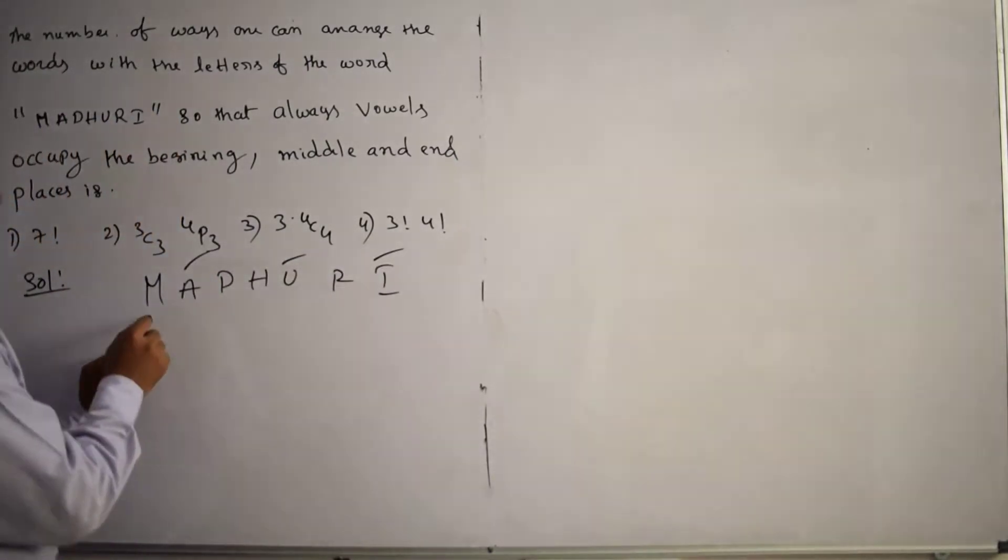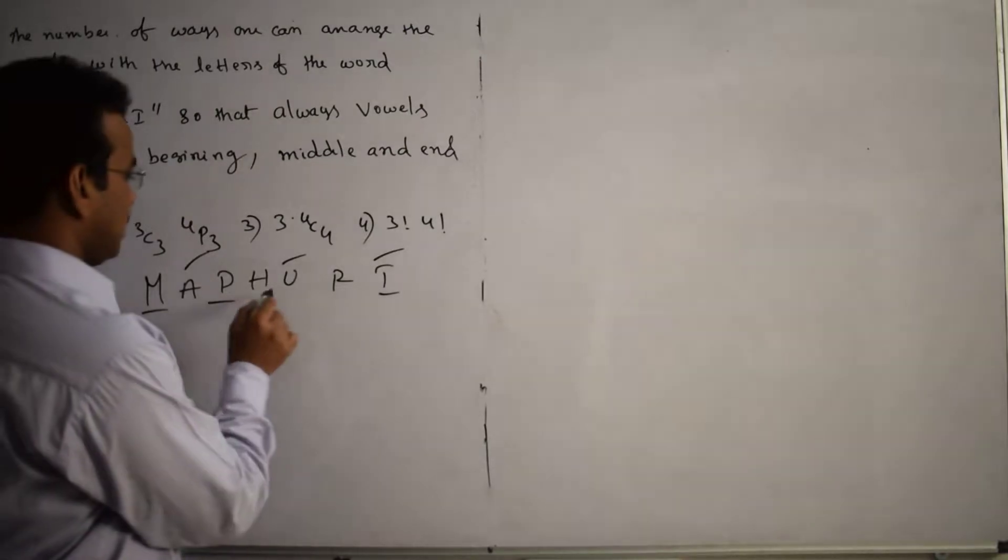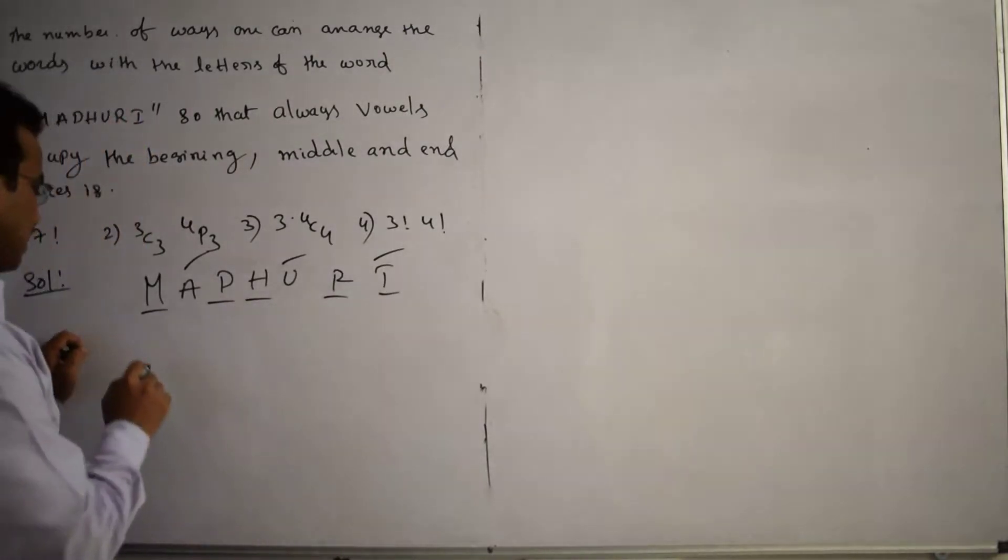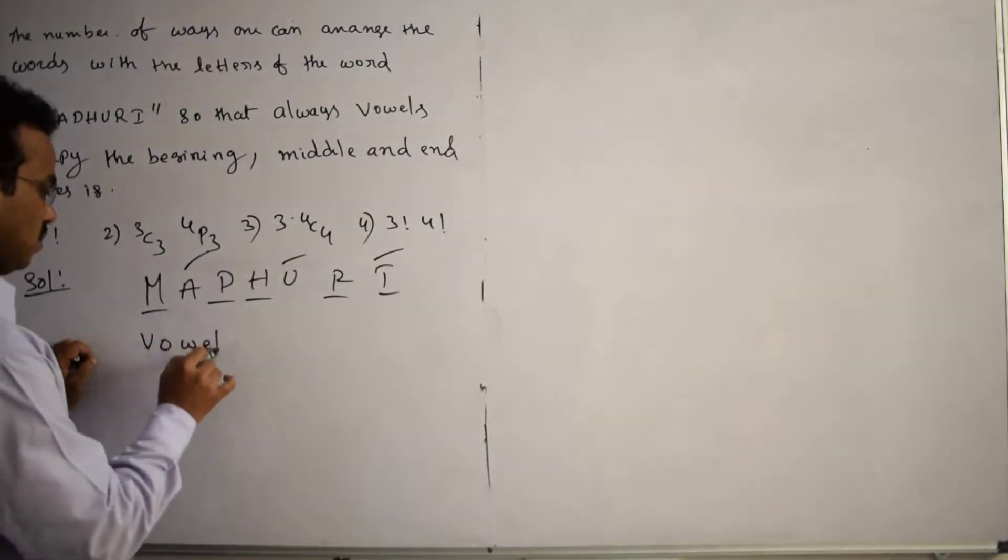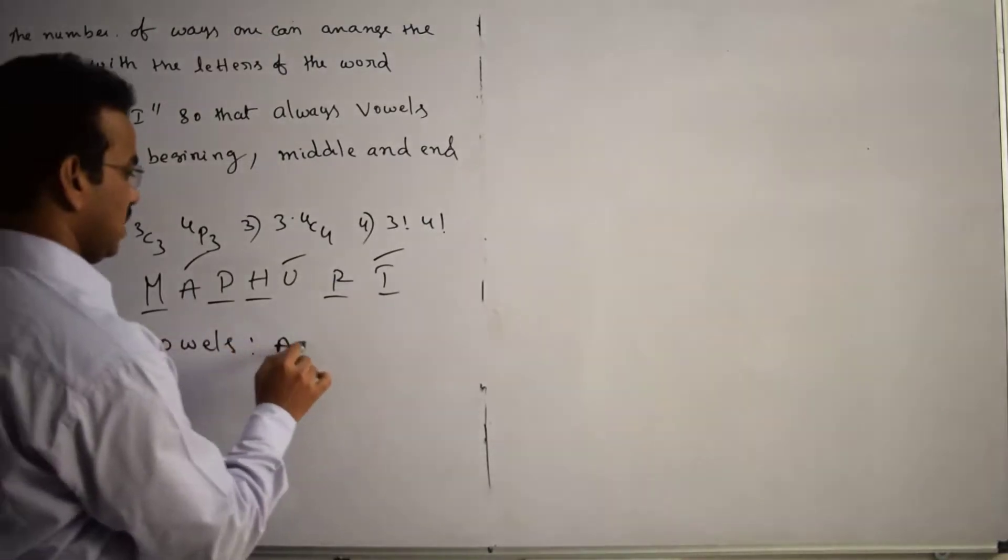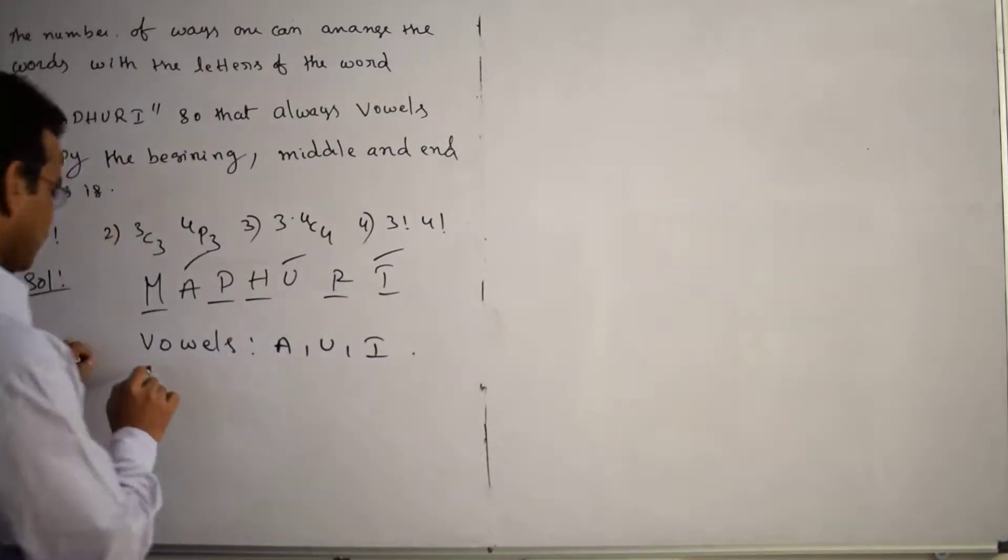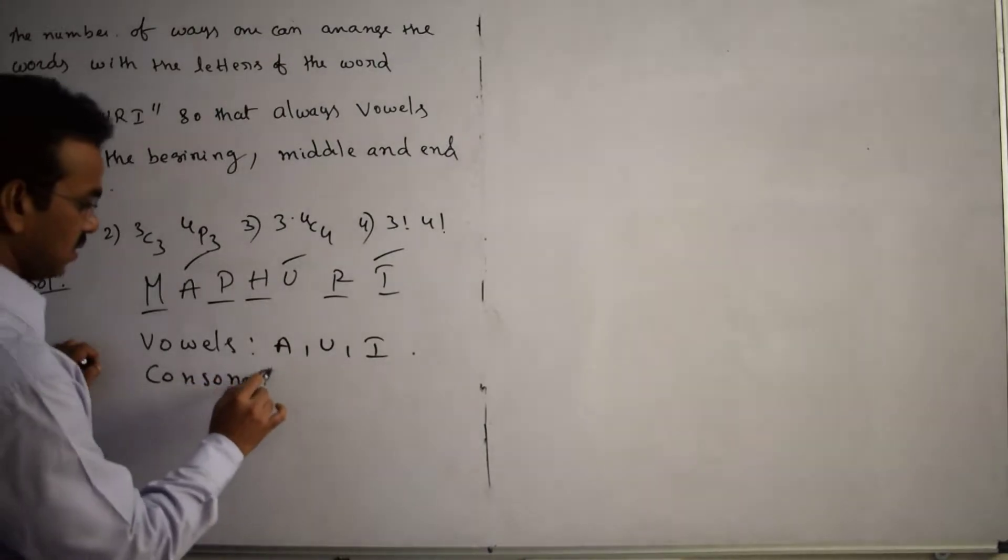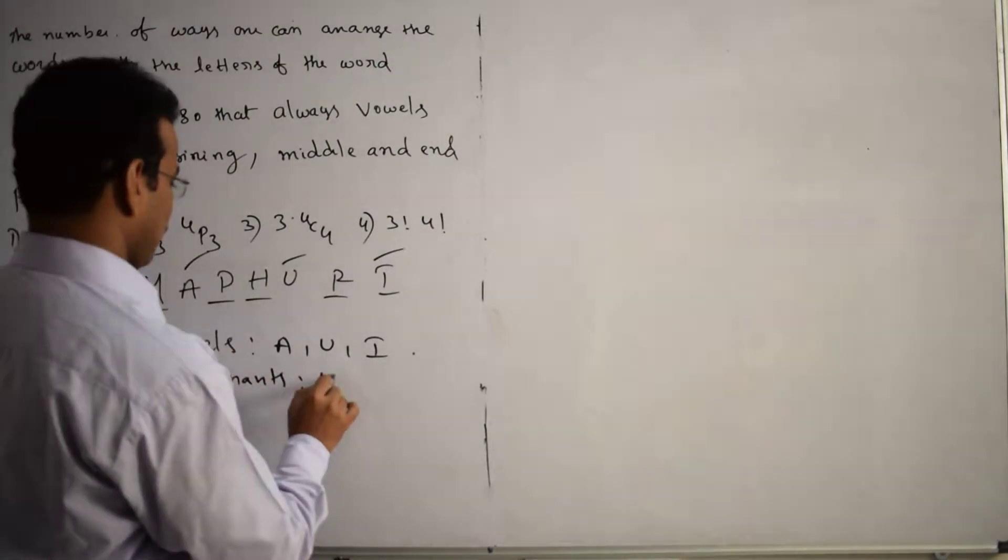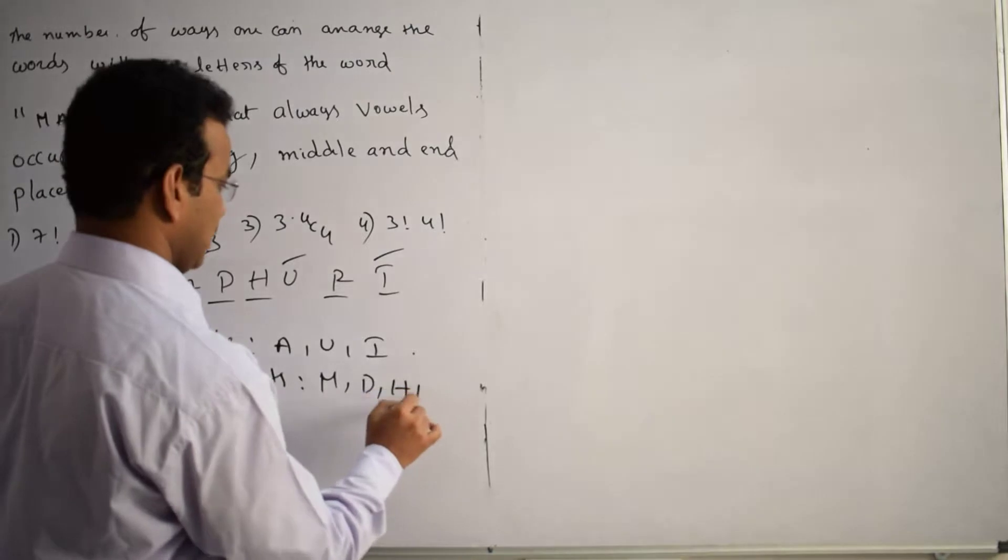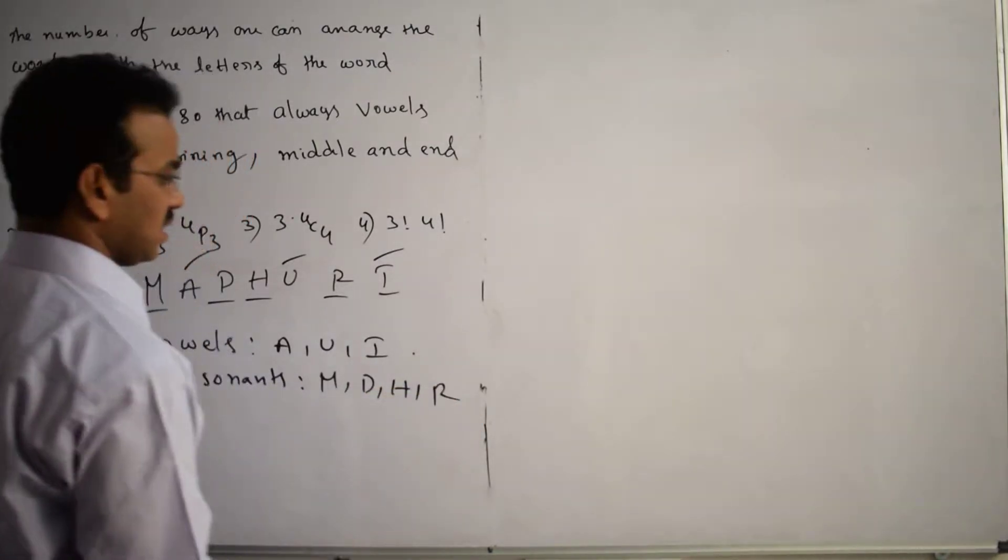What are the consonants? The consonants are M, D, H, and R. Let me write: Vowels equals A, U, I. Consonants equals M, D, H, and R. These are the consonants.